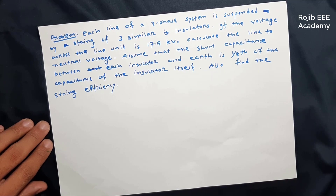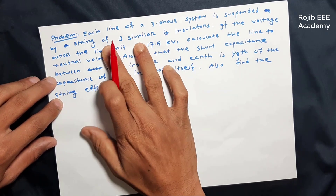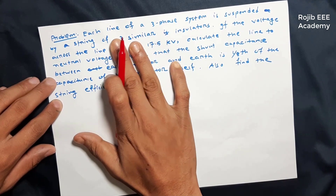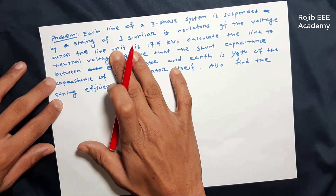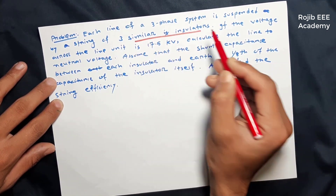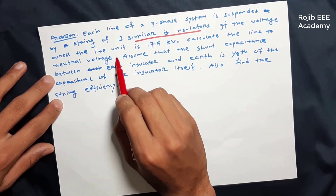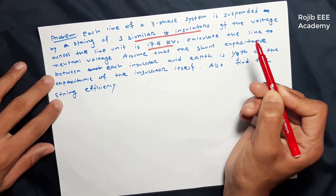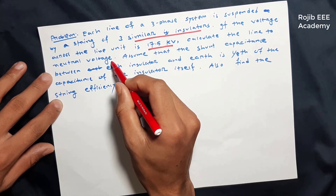In this power system analysis course video, we are going to talk about string efficiency related to reactor problems. Each line of a three-phase system is suspended by a string of three similar insulators. If the voltage across the line unit is given, we calculate the line-to-neutral voltage.